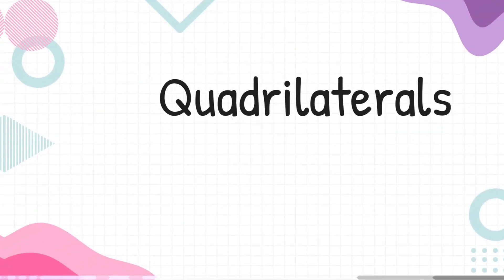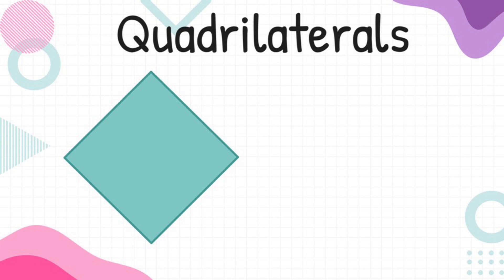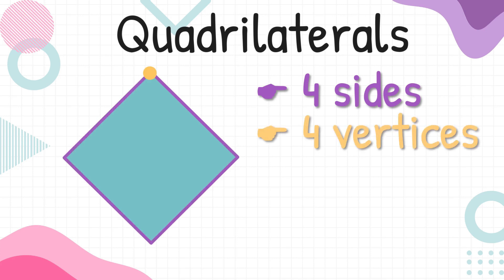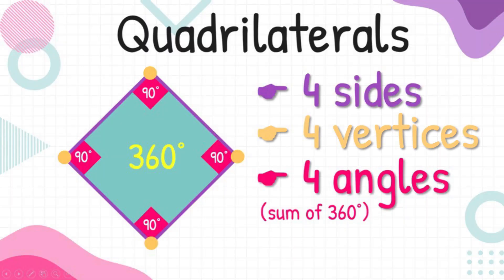This figure is an example of a quadrilateral. Quadrilaterals are polygons with four sides, four vertices, and four angles that add up to 360 degrees.